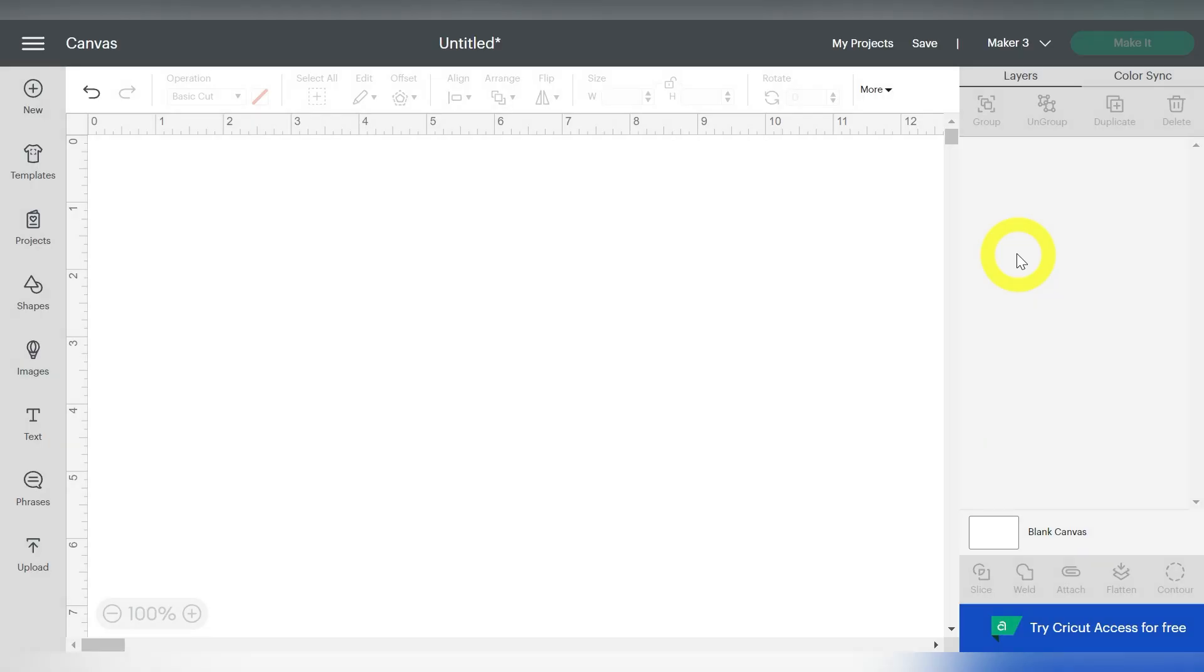Alright guys, so here we are in Cricut Design Space. Now I've just opened up a brand new canvas. So you can do that by going to New Project, or if you need help getting started in Cricut Design Space, we do have a really great video for you already on the YouTube channel, so be sure to check it out. But for today, we're going to go ahead and start by uploading our SVG file.